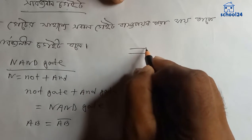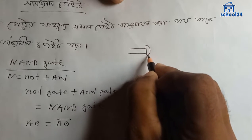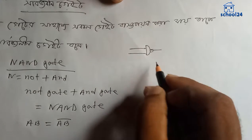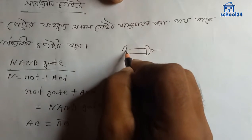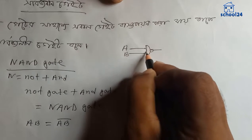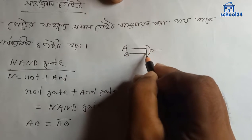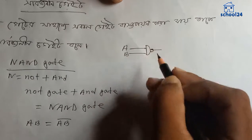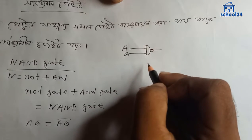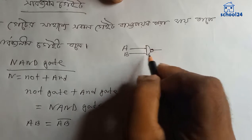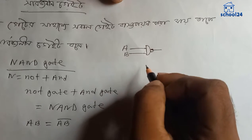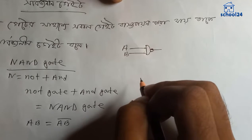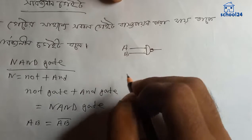N-gate is the same but a NOT-gate is the same. A and B — this is N-gate, a circle, and that circle is NOT-gate. N-gate is called by NOT-gate.